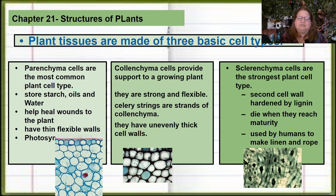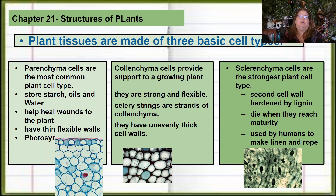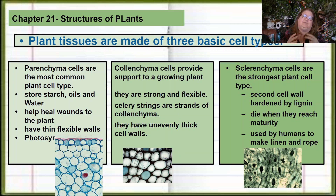Plants are a little alien to us in terms of how they're made up. If I asked you about the body plan of animals, you could probably come up with skin, bone, muscle, hair, fur, or scales — you'd have that familiarity. But if I asked you about plant tissues, you'd draw a blank, which is understandable. Plants are made of three basic cell types and three tissues.